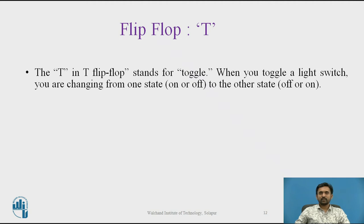Now, we discuss about the T type flip-flop. The T in T flip-flop stands for toggle. When you toggle a light switch, you are changing from one state to the other state. If the two inputs J and K of a JK flip-flop are tied together, it is referred to as a T flip-flop. The process is even easier if you are starting with a JK flip-flop, no additional gates are required.